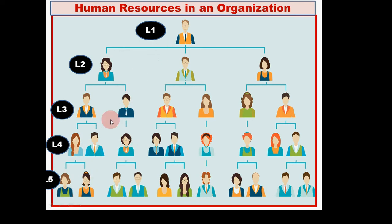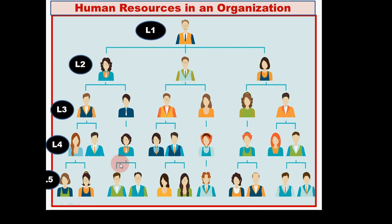Some organizations have five levels, some have four, some have three. If information is important, there is a communication need. So how does communication happen? This is the company, and the corporate institute has human resources.